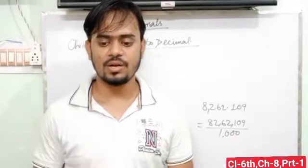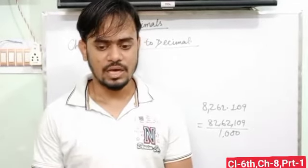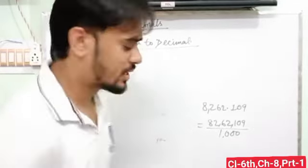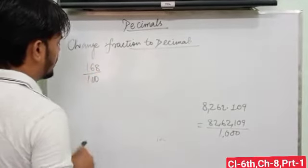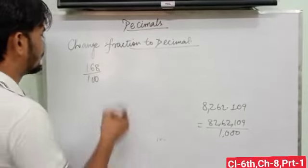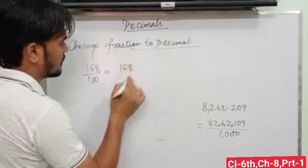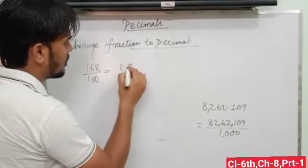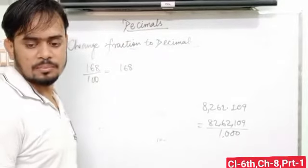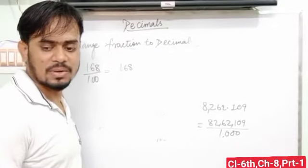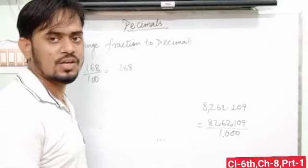In order to convert a fraction into a decimal, follow these steps. Obtain the fraction and convert it into an equivalent fraction with the denominator 10, 100, or 1000. First write the whole number, and after that mark the decimal point after as many places from the right as there are zeros after 1 in the denominator.